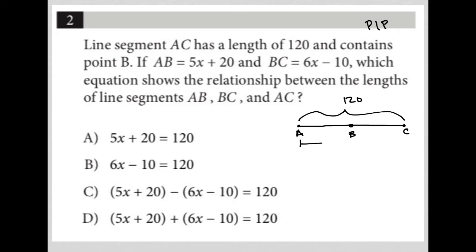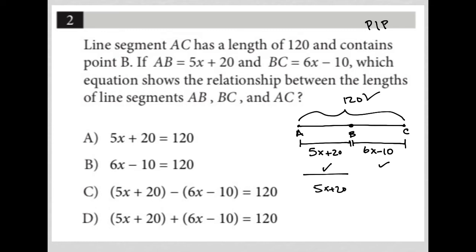If AB — this distance here — is equal to 5x plus 20, and BC equals 6x minus 10 — so this distance here is 6x minus 10 — then the equation showing the relationship between AB, BC, and AC would be: (5x + 20) plus (6x − 10) is equal to the entire length, which we know is 120.